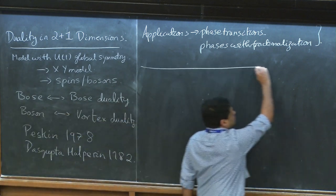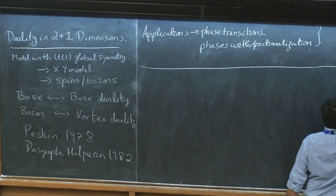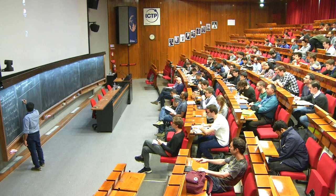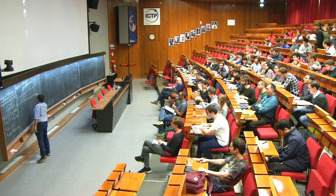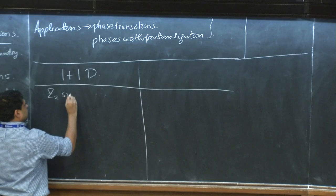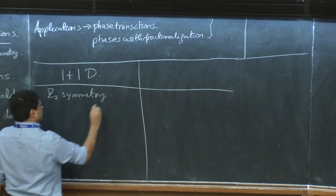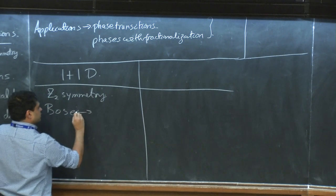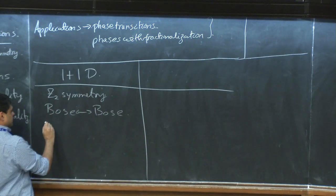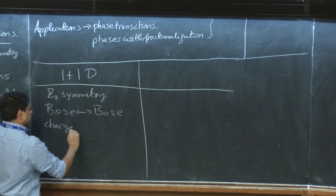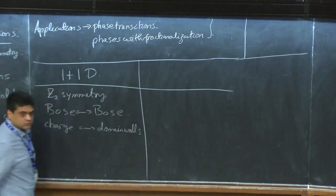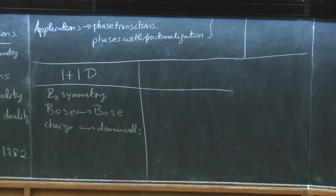Just to remind you what happened in one dimension and how that's going to translate to the physics in this two-dimensional context: in one dimension we looked at a model with Z2 symmetry and developed a duality between two bosonic descriptions. On one side you had the spin flips or the charges, and on the other side you had the domain walls — those are the two degrees of freedom that we exchanged.